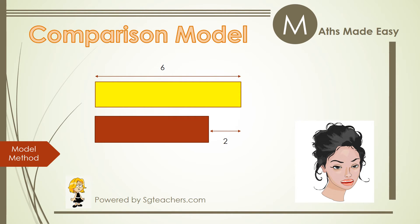We can also use a pictorial model to represent the problem as shown on the left. 2 rectangles are drawn. They are to make comparison to find the difference. Hence, 6 minus 2 equals 4. There are 4 apples.